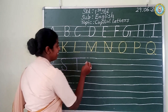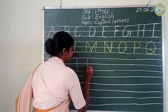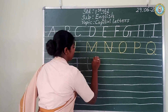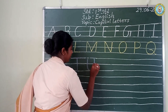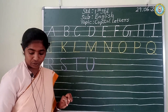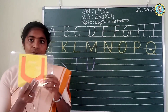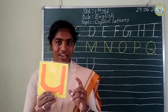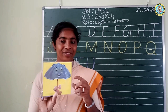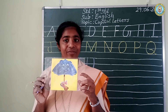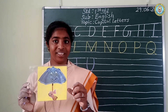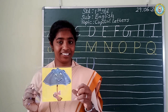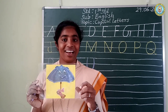Next letter. U. U for umbrella. U for umbrella. When do we use an umbrella, children? During rainy season we use an umbrella.